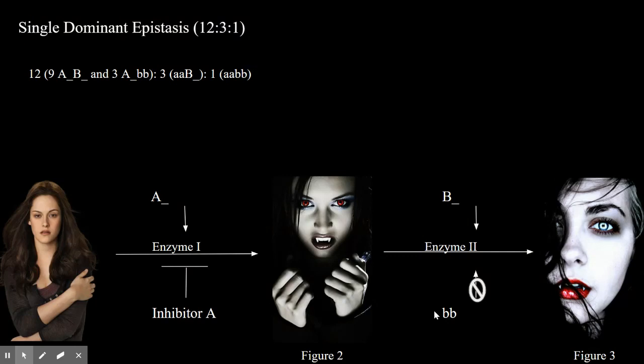Single dominant recessive epistasis results in a big A allele acting as a repressor and preventing the intermediate or the final phenotype. If someone has a big A allele either heterozygous or homozygous they will remain a human. In order to be a vampire they must have homozygous recessive little a. Then once they are a vampire another gene loci will determine their eye color.